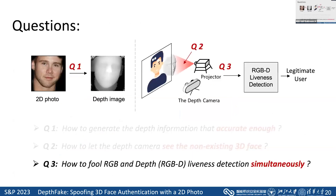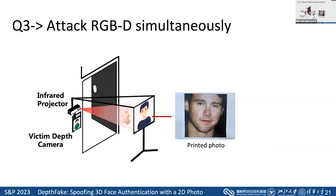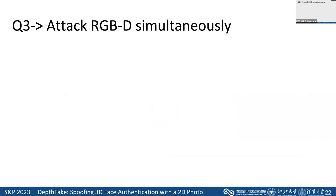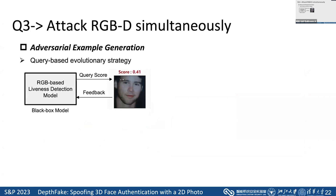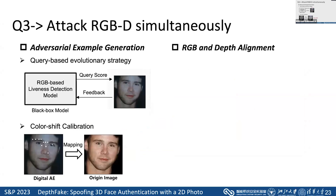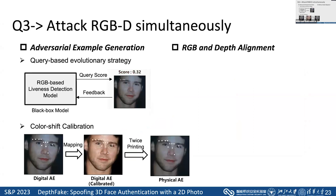After spoofing the depth-based liveness detection, we find most commercial systems use both RGB and depth images for authentication, so we need to align the RGB and depth image. We used a printed photo to reflect infrared for the target system but found it failed, because systems are usually deployed with RGB-based liveness detection as well, using textures, distortions, and edges of the photo to determine if it's a real face. Since these systems are based on convolutional neural networks, we resort to adversarial attacks. As the target system is a black box in the real world, we use a query-based evolutionary strategy to generate adversarial examples, and then calibrate the color shift caused by printing. We replace the printed photo with the original image and map all adversarial perturbations to prevent the color shift.